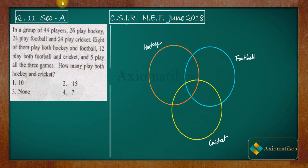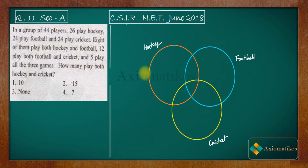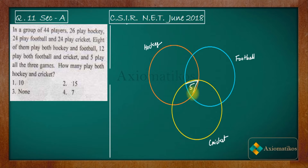Here is the Venn diagram we need. The trick for problems like this is to begin with all those players who play hockey, football, and cricket. In every problem like this, you first pick the players who play all three things. We have five players who play all three games, so we place 5 inside the central area, which represents those players who play all three games.